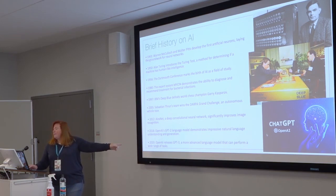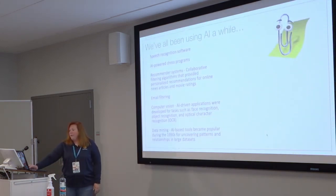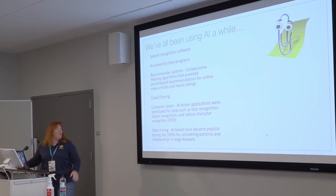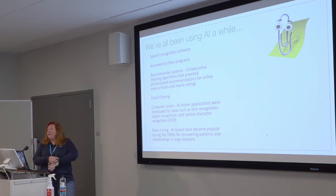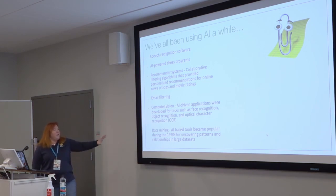I stopped the history at 2020 because once we get past 2020, that's where it just went crazy — one notation after another every week. So here's where we are: we've been using AI a while. Speech recognition — remember on the old IBM clones we had Dragon Speech? The AI-powered chess system — remember when it beat the famous chess champion? That was big news. Email filtering — we could use even more intelligence in that. We've been using AI for quite some time.